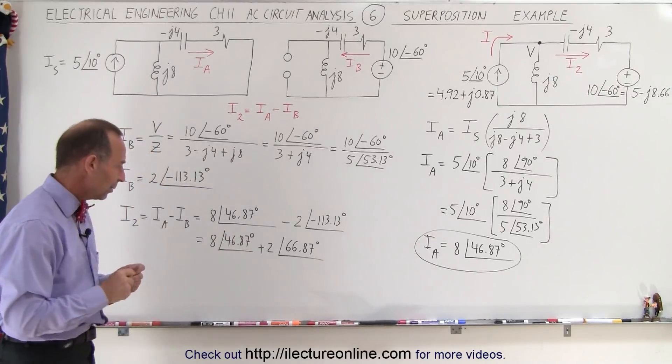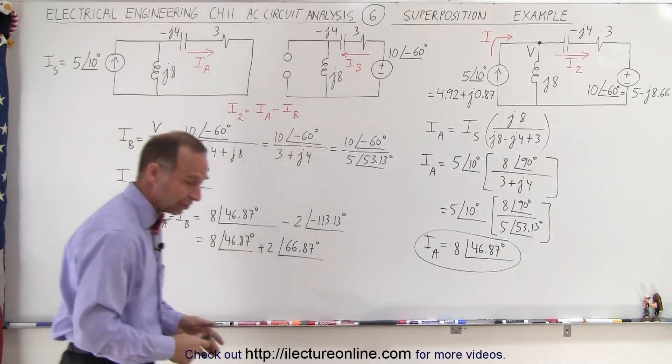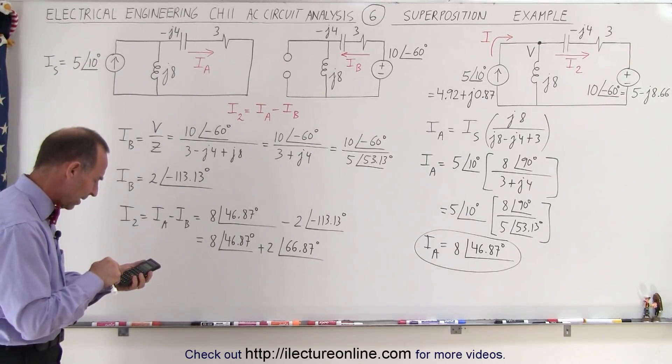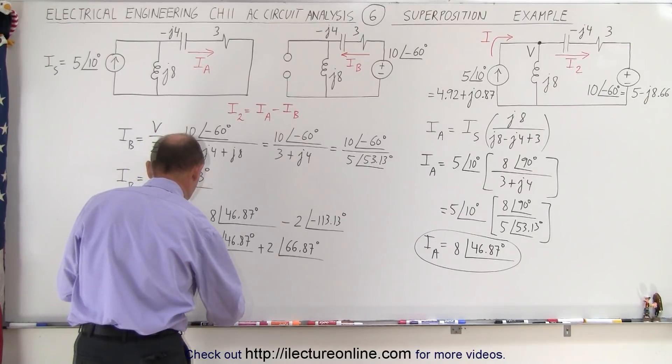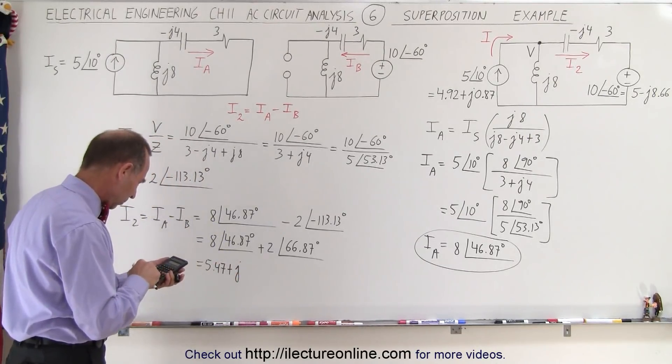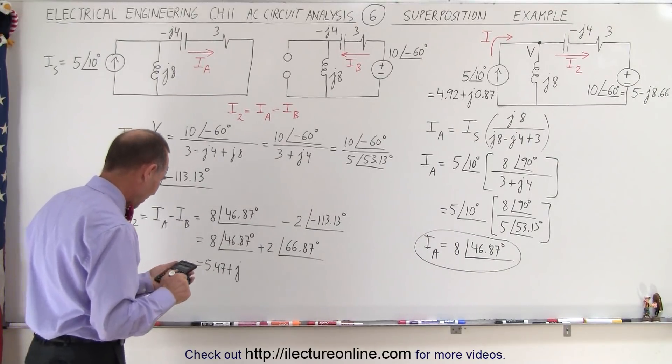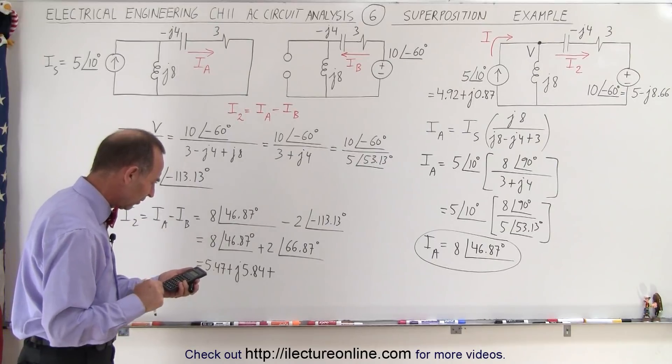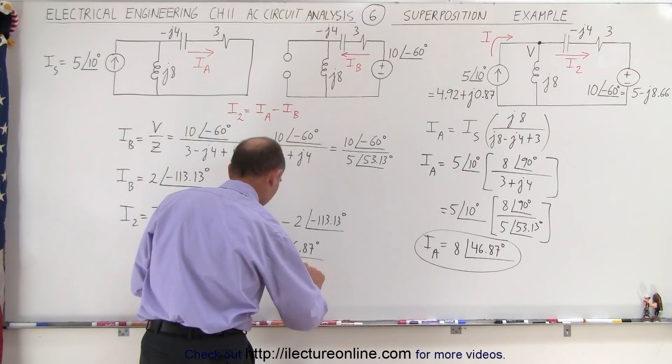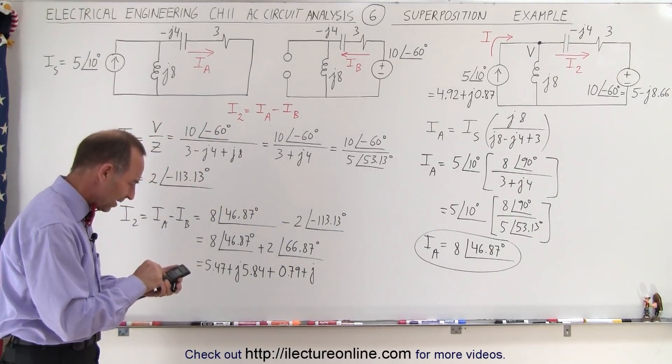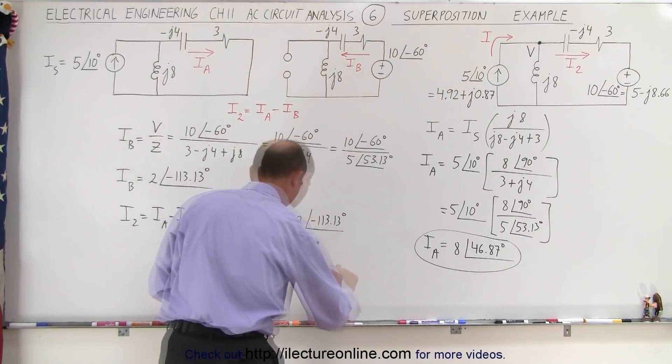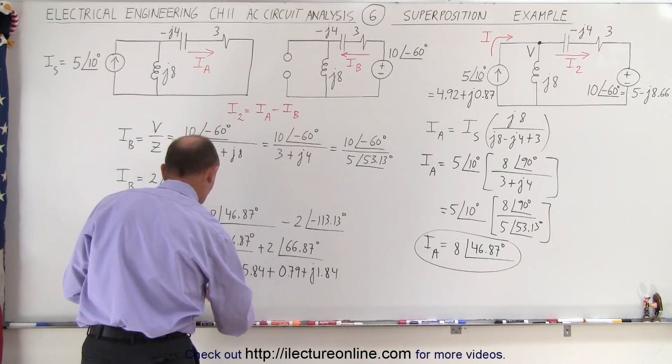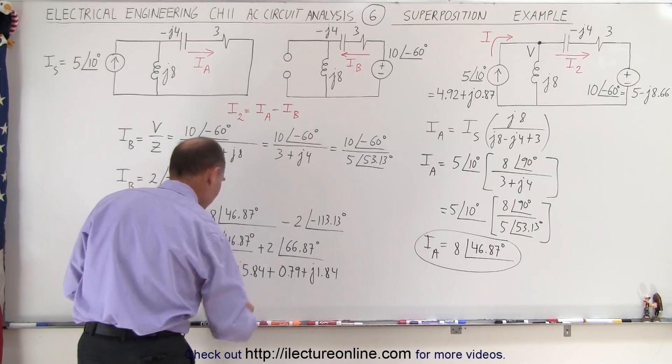So let's go ahead and do that. 46.87, take the cosine of that times 8 equals 5.47 plus j, 46.87 take the sine of that times 8. Plus, 66.87, cosine times 2 gives us 0.79. Which is equal to when we add those together, that would be 6.26 plus j 5.84, that would be 7.68.